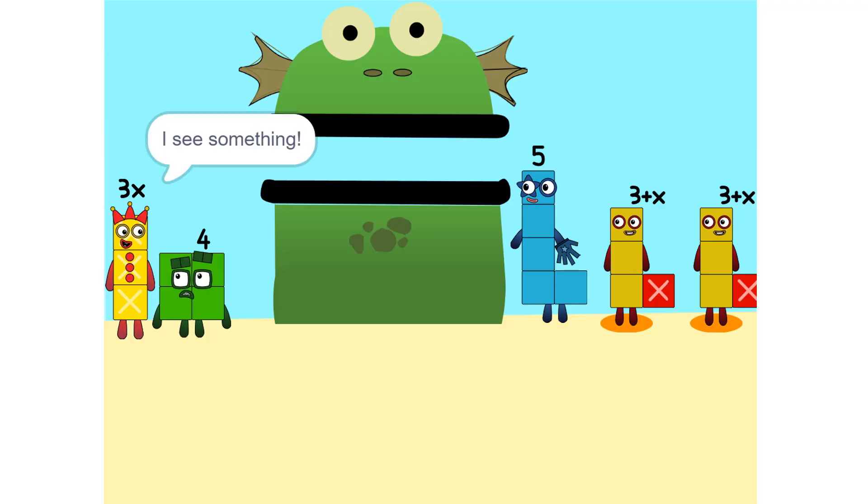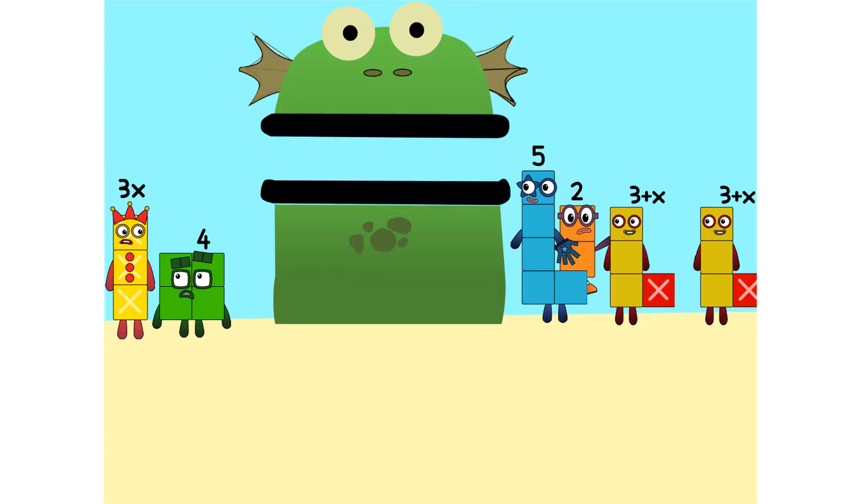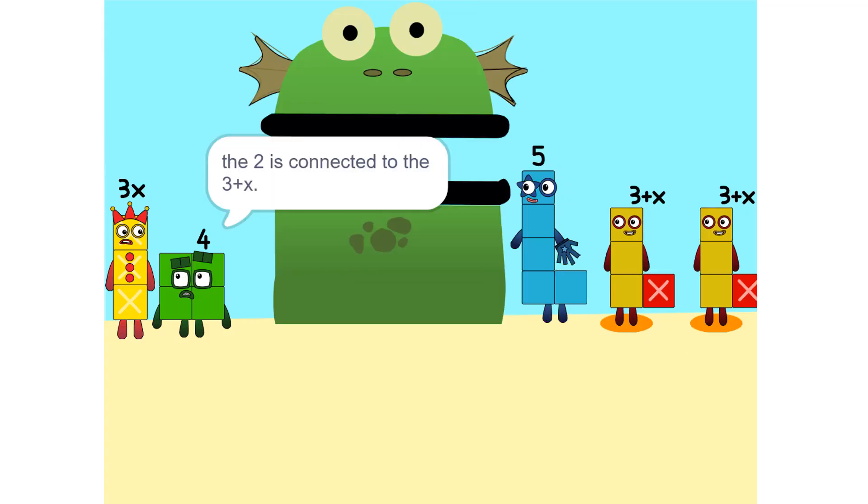I see something. We can add these. Why did that happen? Because the 2 is connected to the 3 plus x. Oh, so? It's like adding apples and oranges. You can. So what do we do?